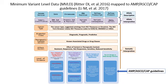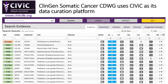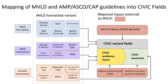Tier 3 contains variants of unknown significance, and Tier 4 contains variants deemed benign or likely benign. The Somatic Cancer CDWG uses CIVIC as their data curation platform. CIVIC stands for Clinical Interpretation of Variants in Cancer and is an open-access, crowd-sourced curation platform as well as cancer variant knowledge base. The minimum variant-level data framework that was described in the previous slides has been incorporated into the CIVIC curation platform for systematic curation of somatic variants in cancer.